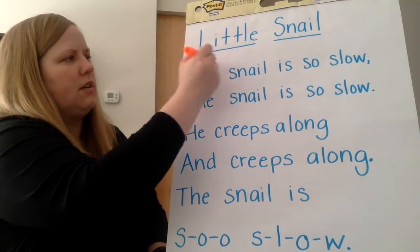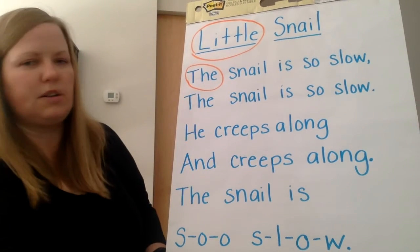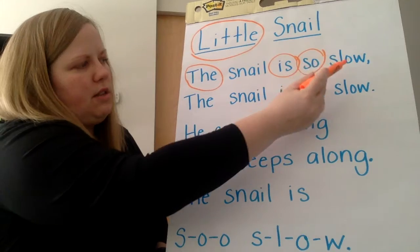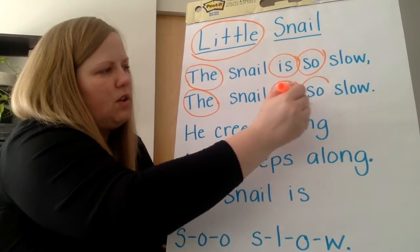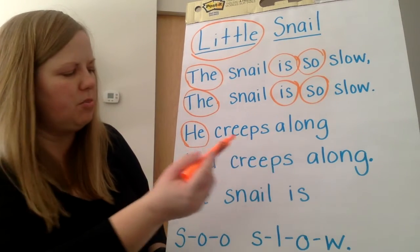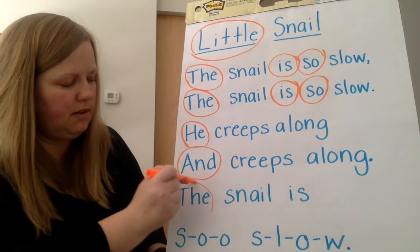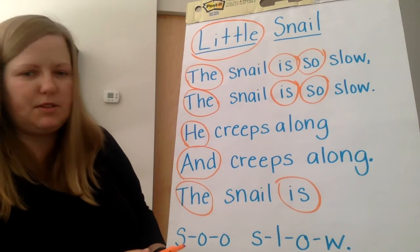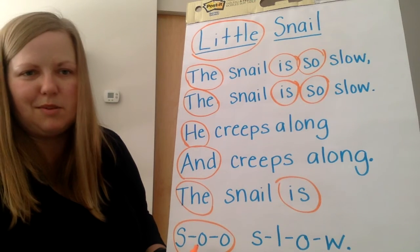I know the word 'little' — little is a sight word, so I'm gonna circle that one. Snail is not a sight word. 'The' — that's a very popular sight word, you'll see that a lot. Snail is so slow. The — that's a sight word. Snail is so slow. 'He' is a sight word, so I'm gonna circle 'he.' Creeps along — nope. 'And' is a sight word. Creeps along. The snail is so slow. I'm gonna circle this 'so' because it's not spelled like the sight word 'so' that we know, but it is supposed to be the sight word 'so,' so it counts.